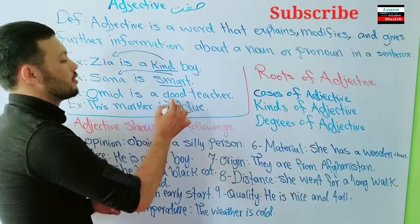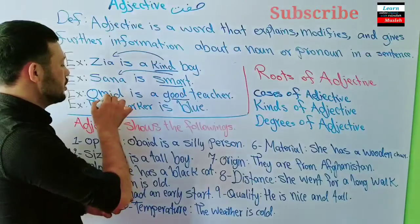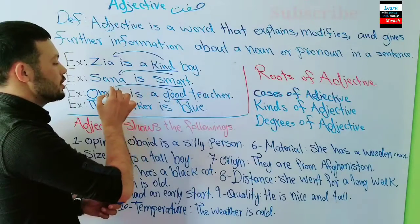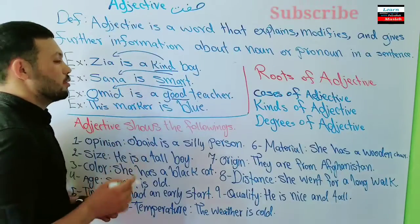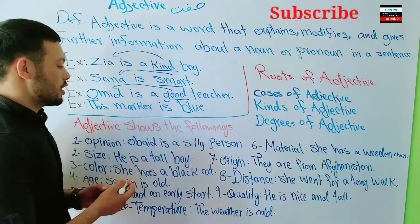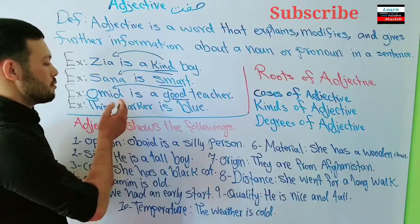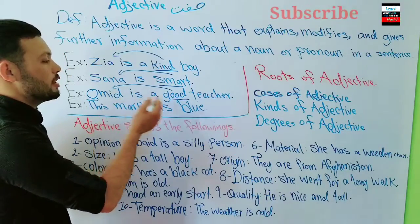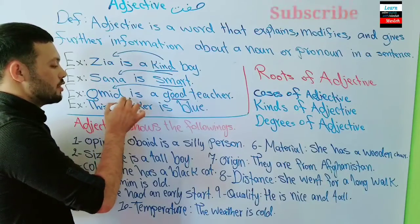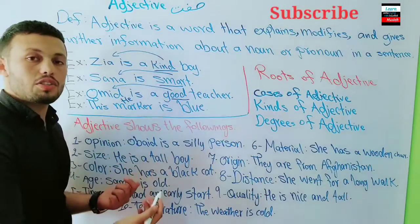So 'good teacher' — 'good' is the adjective, and 'teacher' is the noun. You could also say 'Ahmed is a good teacher,' 'She is a good teacher,' or 'He is a good teacher.' The adjective 'good' describes the teacher in all these cases.